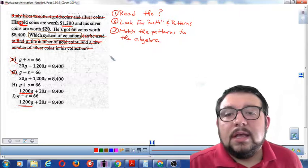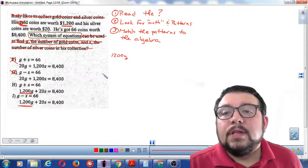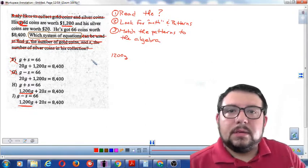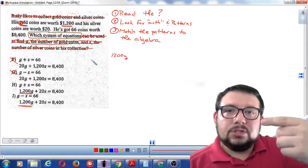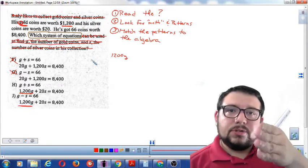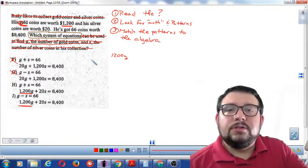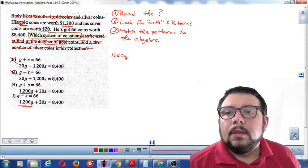Okay, so the first pattern we saw was that each gold coin is worth $1,200. So that's a pattern. Because each coin is worth an additional $1,200. That's a pattern. $1,200, $1,200, $1,200, $1,200 for each coin.